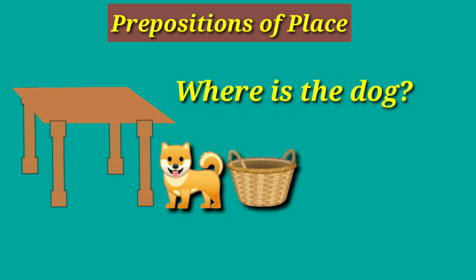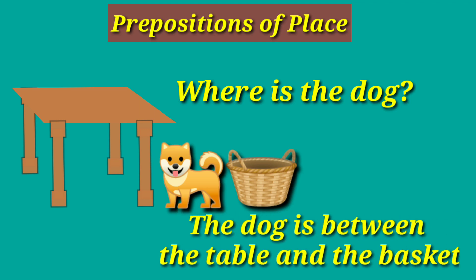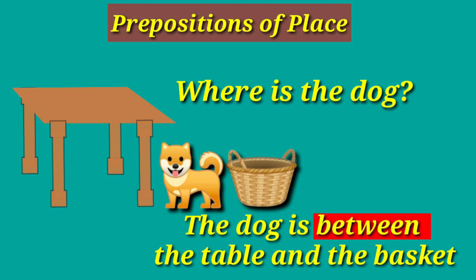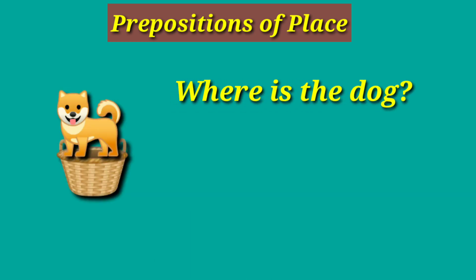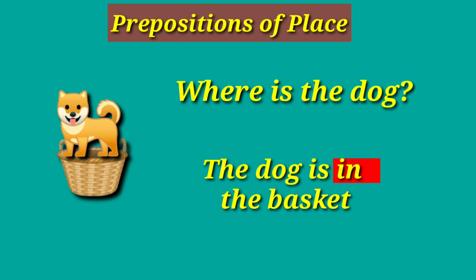Where is the dog? The dog is between the table and the basket. Where is the dog? The dog is in the basket.